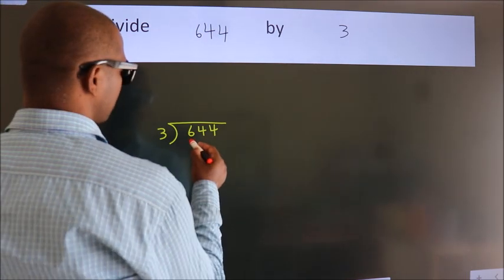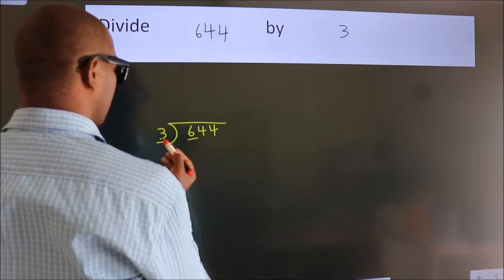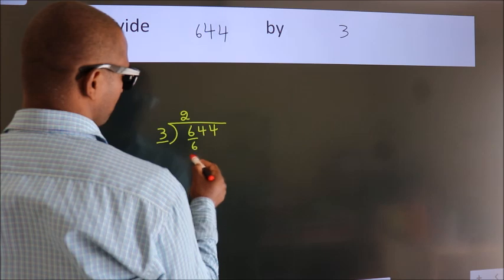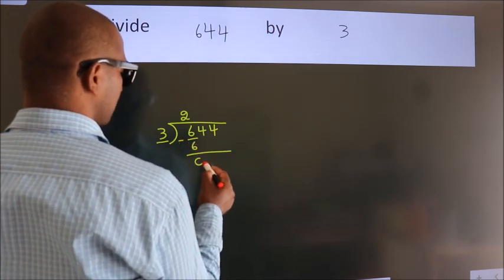Next, here we have 6, here 3. When do we get 6? In 3 table, 3 2s, 6. Now, we should subtract, we get 0.